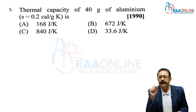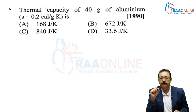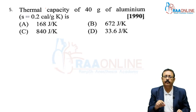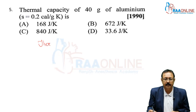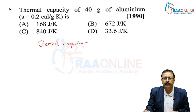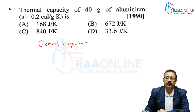Next problem from AIPMT 1990: the thermal capacity of 40 grams of aluminum. The thermal capacity formula is M × S — it is the heat required to raise the temperature of an object by 1 degree. So thermal capacity of any object equals its mass times its specific heat.